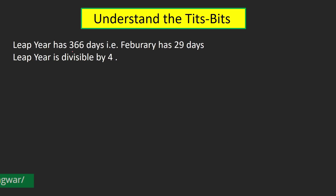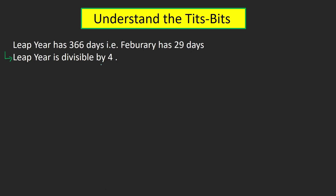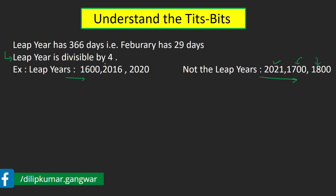A leap year has 366 days — the February month will have 29 days instead of 28. Many of us know that a leap year is divisible by 4 completely, meaning on dividing the year by 4 we get remainder 0. But 2021 is not divisible by 4, and 1700 and 1800 are both divisible by 4 yet are not leap years. So the definition that any year divisible by 4 is a leap year seems to be wrong.